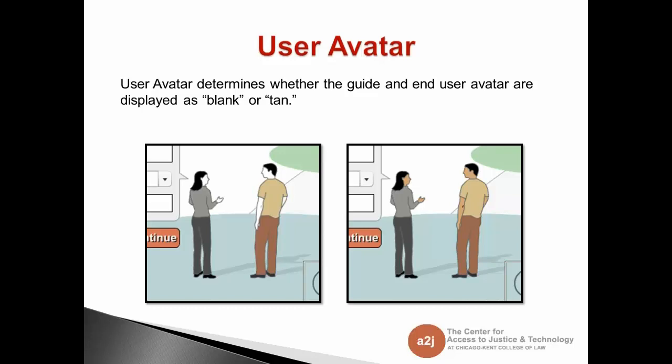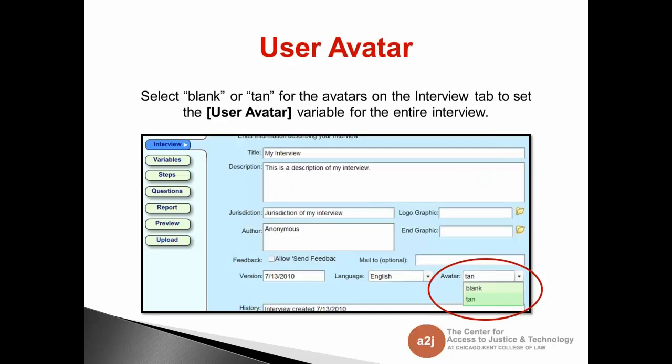The first one is the user avatar. User avatar determines whether the guide and the end user avatar are blank or tan — those are the two current options for skin tone. Potentially in A to J 5, rolling out in 2013, we may have more options. You select the avatar in the interview tab — the tab where you set your title, jurisdiction, logo graphics, end graphics, version, history, language for navigation buttons (English or Spanish), and the avatar, which is either tan or blank.